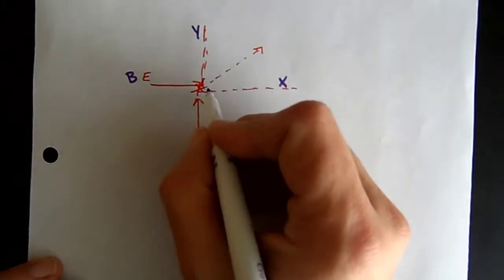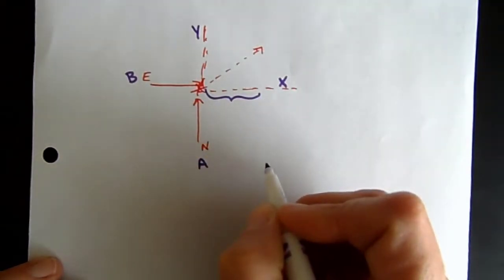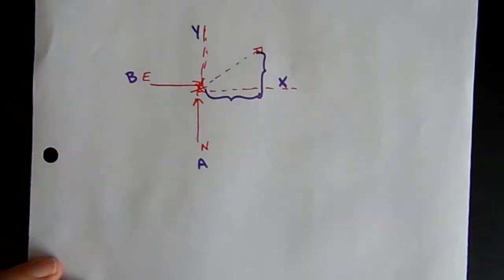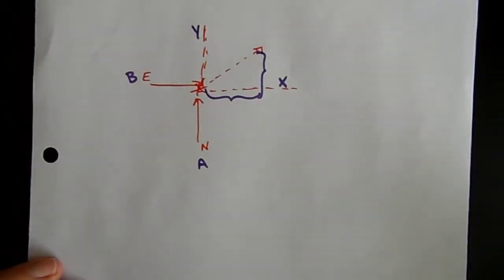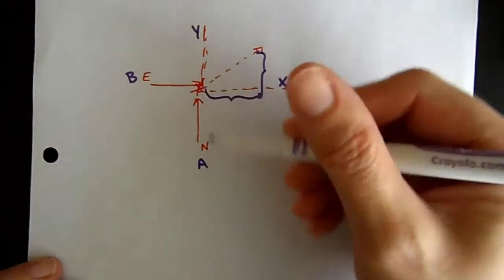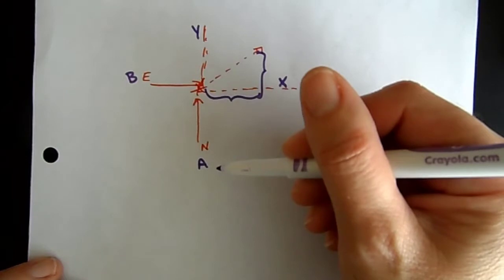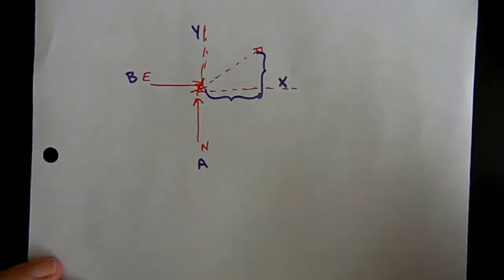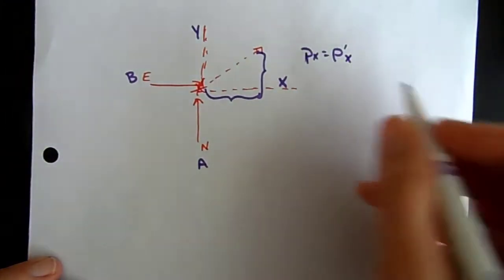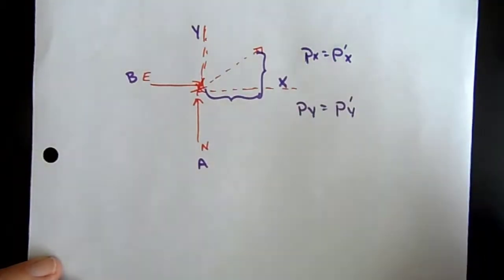Some of the final momentum is in the x direction and some is in the y direction. What's nice about conservation of momentum is that momentum is not just conserved overall, but it is conserved along each coordinate as well. So p in the x direction equals p final in the x direction, and p in the y direction equals p final in the y direction.